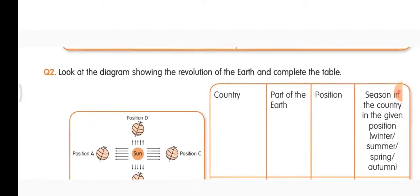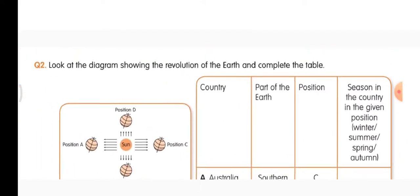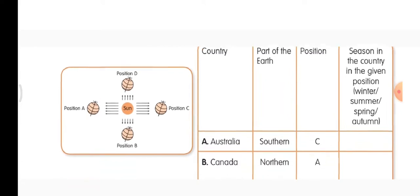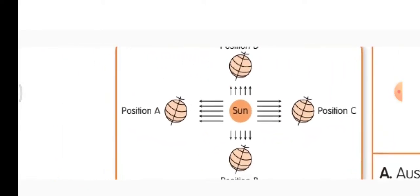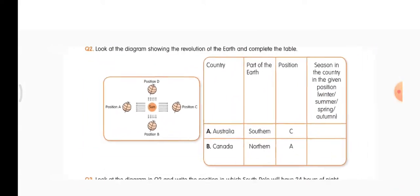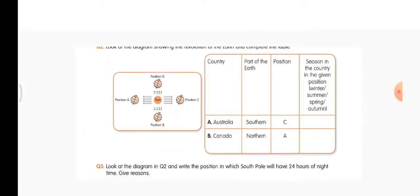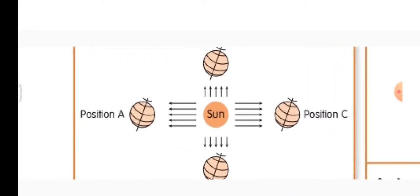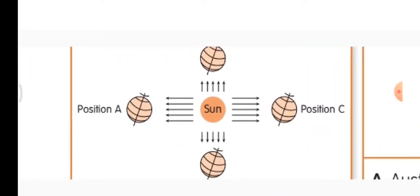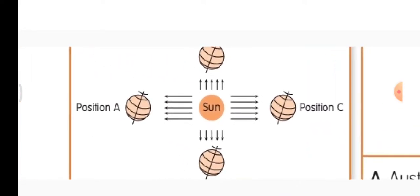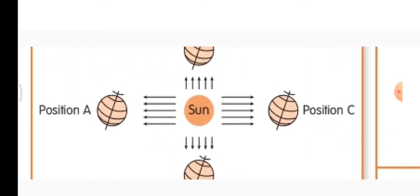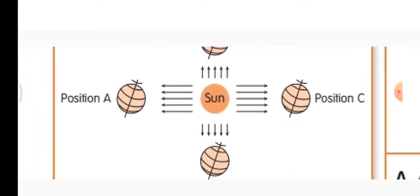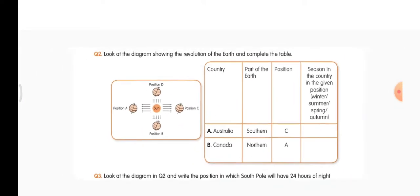Second question: look at the diagram showing the revolution of earth and complete the table. This is the diagram — you can see the position of the earth. Four different positions are given. You have to remember where the north pole and south pole is, and which position each represents.